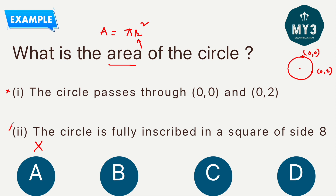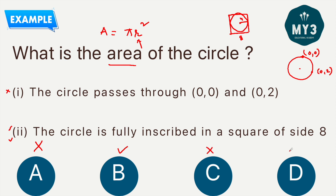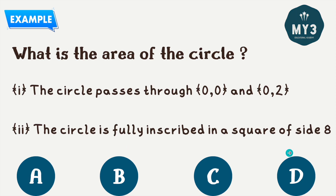Statement 2: The circle is fully inscribed in a square of side length 8. If a circle is inscribed in a square with side 8, the diameter equals 8, so the radius is 4. Once we have the radius, finding the area is straightforward. Statement 2 is giving the answer, so mark the answer as option B and eliminate the other options.